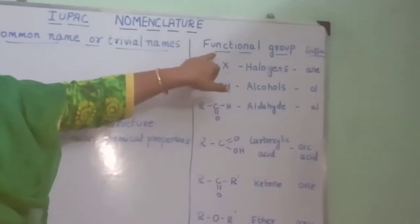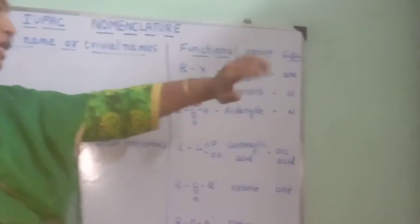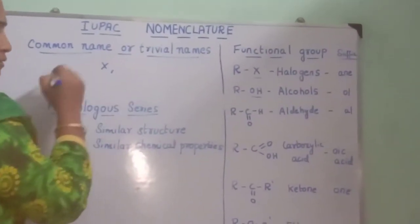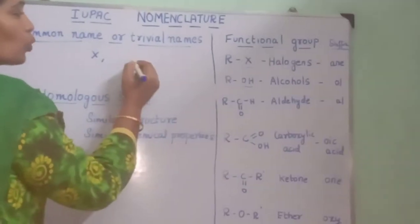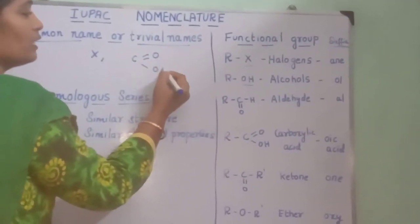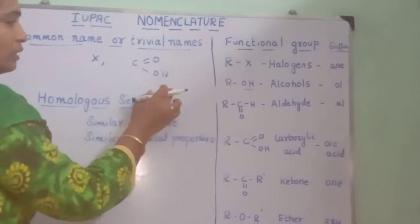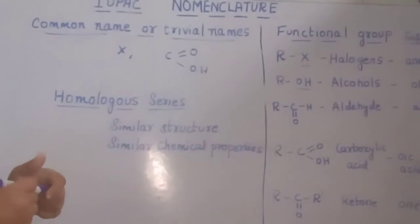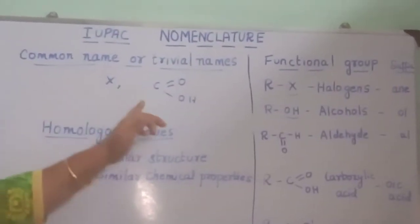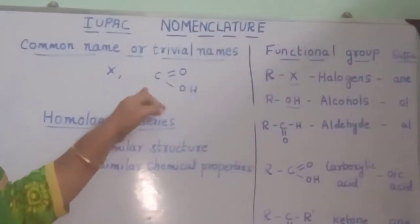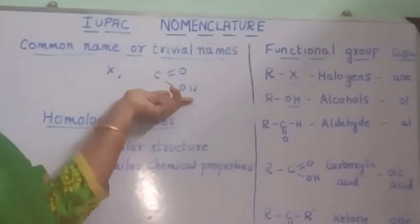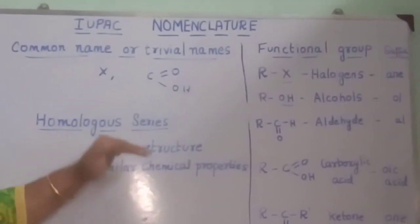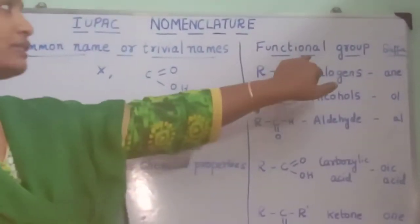Now we are going to see what is meant by functional group. A functional group can be an atom, or it can be a group of atoms arranged in a specific manner, which gives the characteristic chemical properties to the compound.